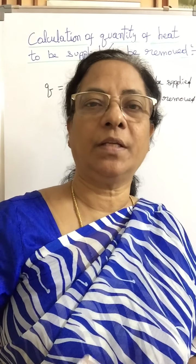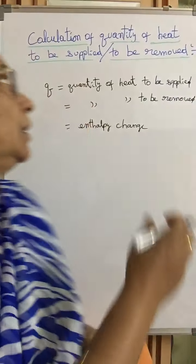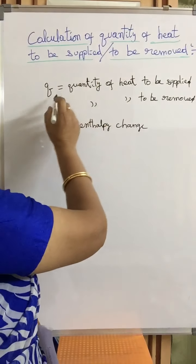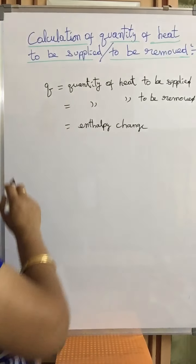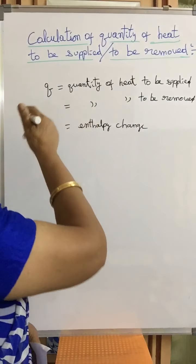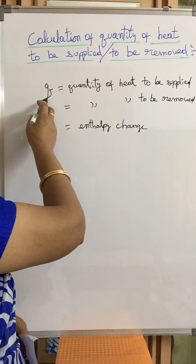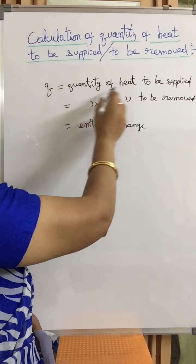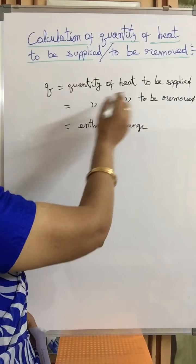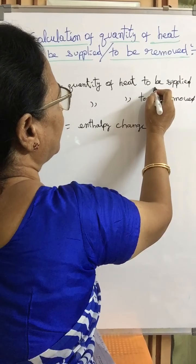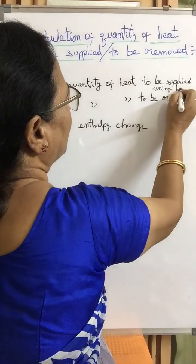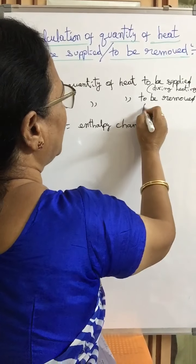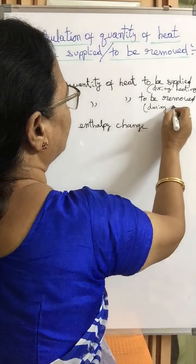Good morning students. Today we will be discussing how to calculate the quantity of heat to be supplied or to be removed. We represent this by small q. According to McCavan Smith, we use this notation q. Small q represents the quantity of heat to be supplied during heating, and the quantity of heat to be removed during cooling.